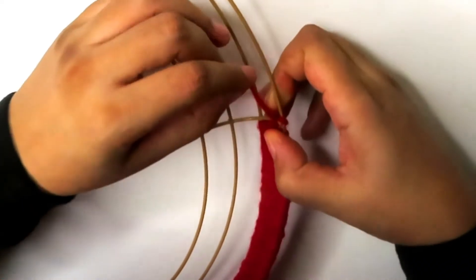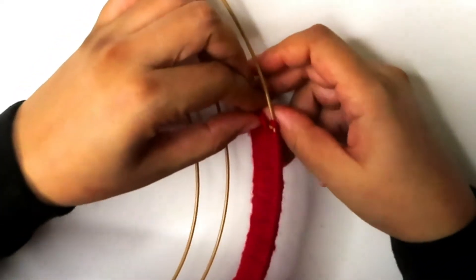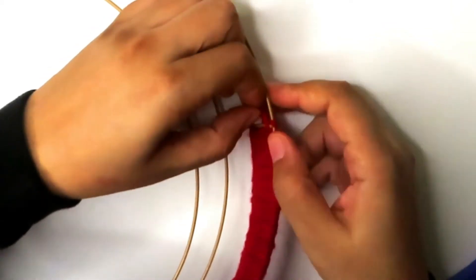Flip your wreath form over and tie the end of the red yarn to the nearest post on the back of the wreath form.